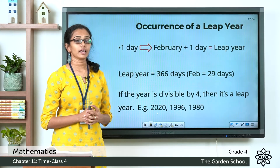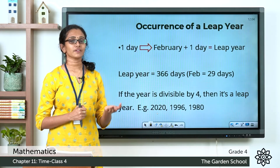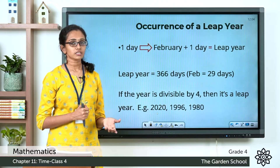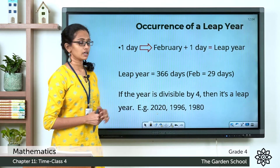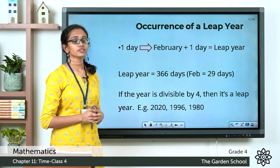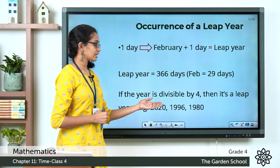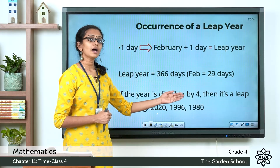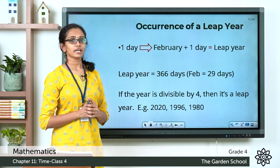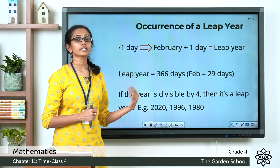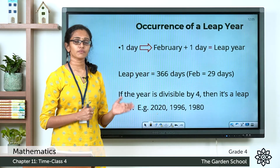A leap year has a total of 366 days. To find out if a given year is a leap year, just check if it is divisible by 4. For example, 2020, 1996, and 1980 are all divisible by 4 and are leap years. If a given year is completely divisible by 4, it will be a leap year.